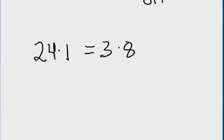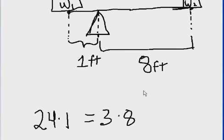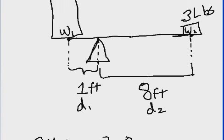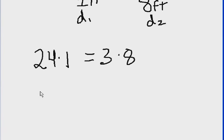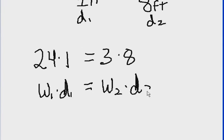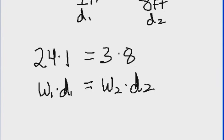Let's say that again. 24 pounds times 1 foot equals 3 pounds times 8 feet. Let's put that into letters. We'll call this distance 1, and this will be distance 2. We got weight 2, distance 2, weight 1, distance 1. I'm going to say this again: weight 1 times distance 1 equals weight 2 times distance 2. We just said that above. 24 times 1 equals 3 times 8. Very understandable.